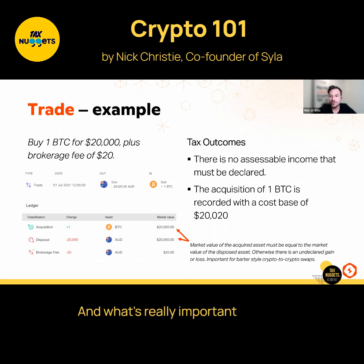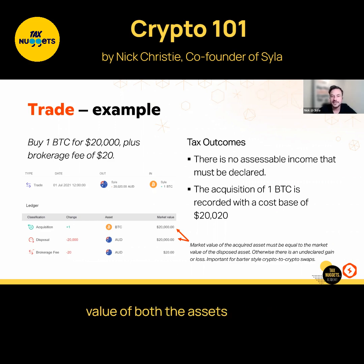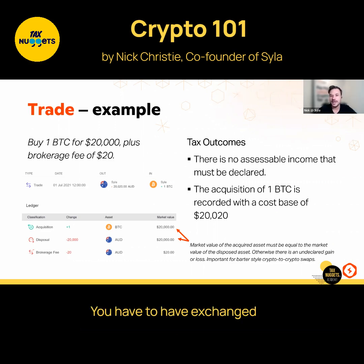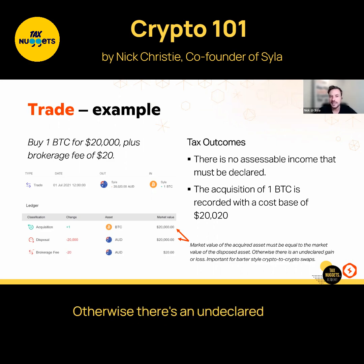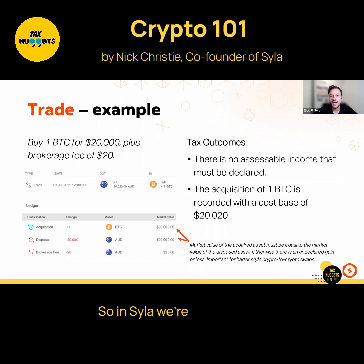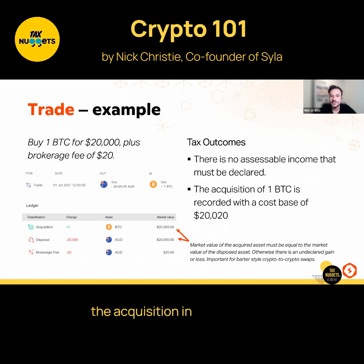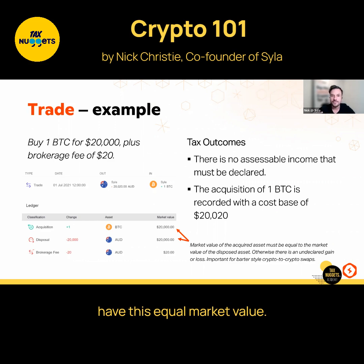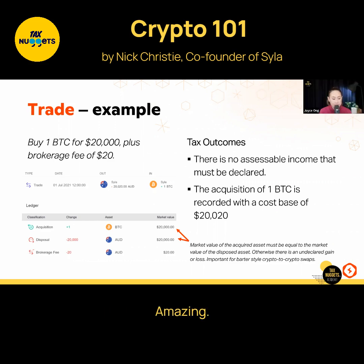This becomes more challenging because there's no direct market value reference. In these barter transactions, the market value of both assets involved in the trade must be equal — otherwise there's an undeclared gain that also needs to be declared. In Silo, we're careful to ensure that the acquisition and the disposal in the trade always have this equal market value.